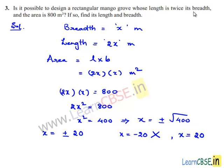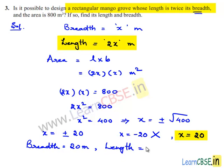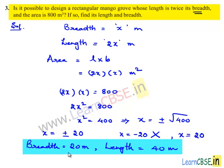That is, breadth is equal to 20 meters. And length is 2 times breadth, which is 2 times 20, nothing but 40 meters. Therefore, the breadth is equal to 20 meters and length is equal to 40 meters.